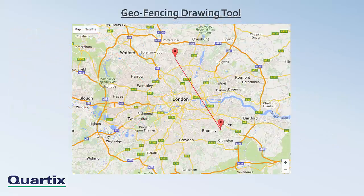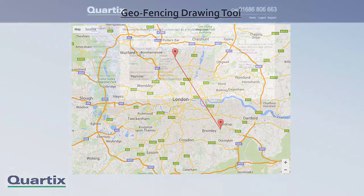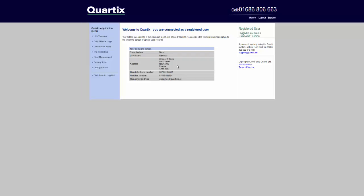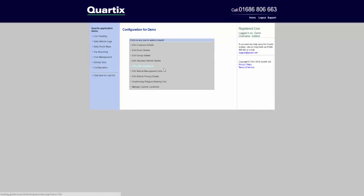Going back to geofence zones, the location points for these areas can be set up by our support team using information submitted, or by yourself. To set up the zones yourself, you can either specify an already customized location, or you can draw a polygon using the geofencing polygon drawing tool. Skipping now to the Quartix system, I will demonstrate how this drawing tool works.